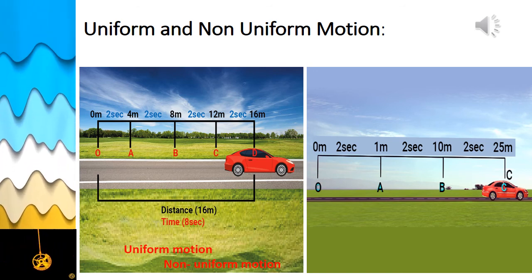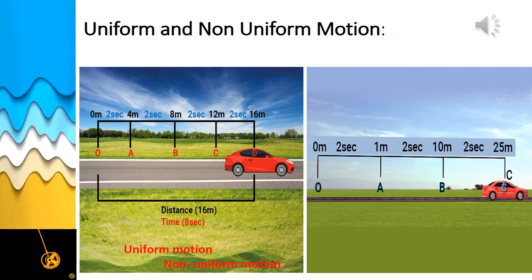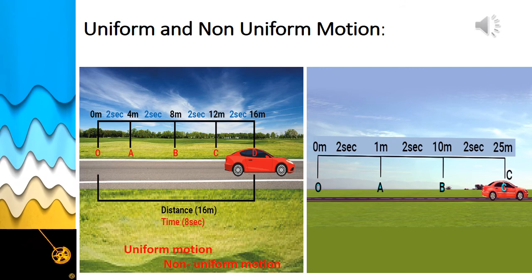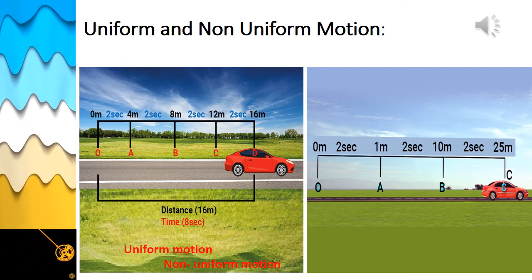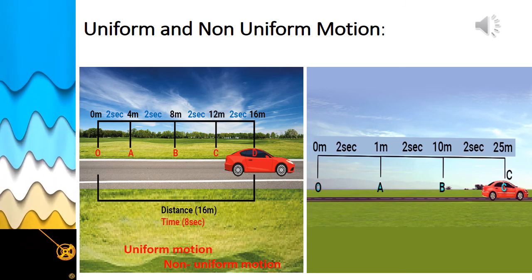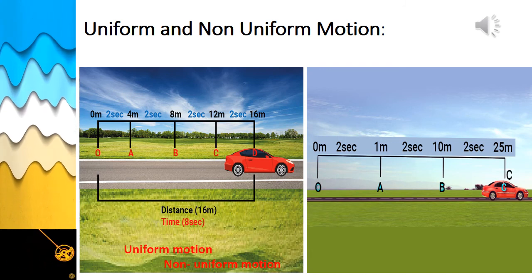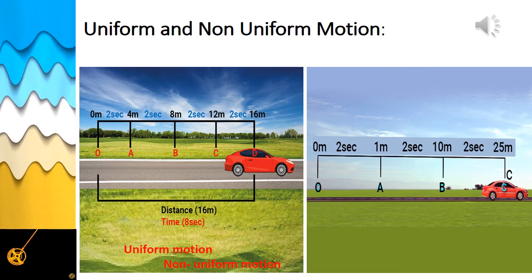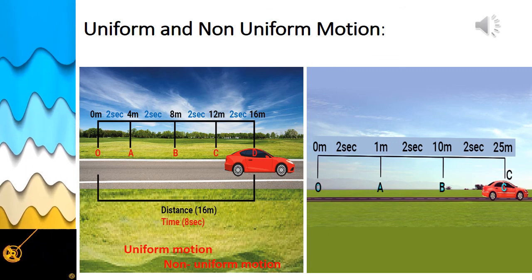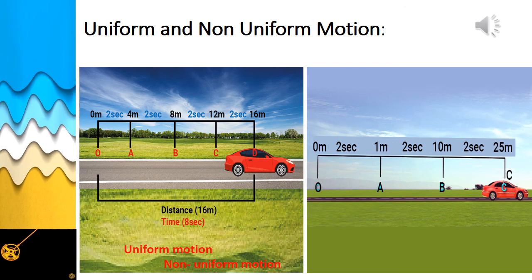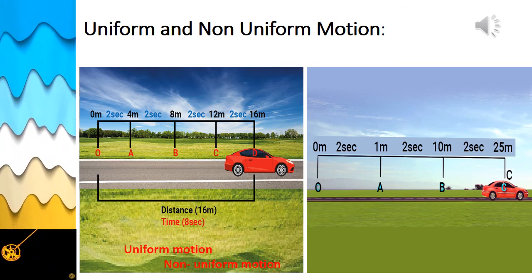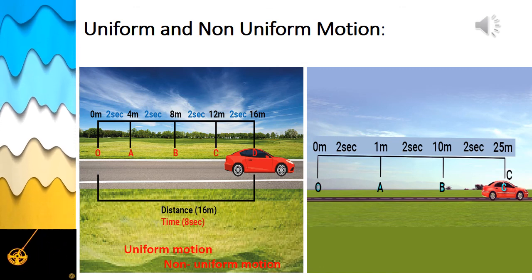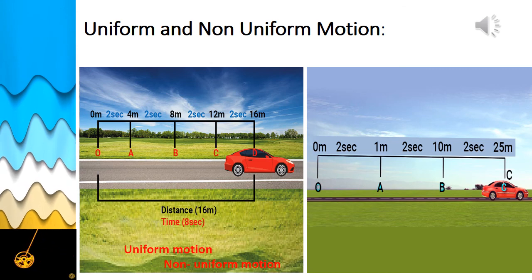On the other hand, an object moving along a straight line has non-uniform motion when its speed keeps changing — it travels unequal distances in equal intervals of time or equal distances in unequal intervals of time. For example, if in 2 seconds a car covers 1 meter, then in the next 2 seconds it covers 10 meters, and in the following 2 seconds it covers 25 meters — unequal distances are covered in equal intervals of time. So this car is in non-uniform motion.